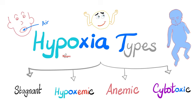Hey guys, it's Medicosis Perfectionitis, where medicine makes perfect sense. Let's continue our pathology playlist. In video number one, we talked about cell injury, which is reversible. Then in video number two, we started talking about the most common type of cell injury, which is hypoxia or anoxia.